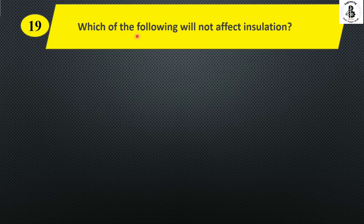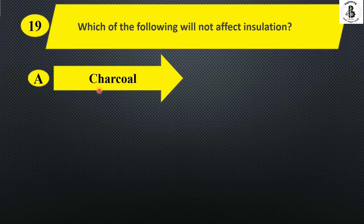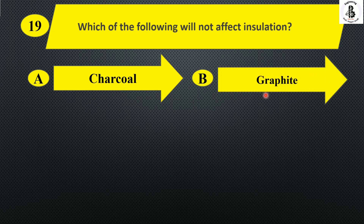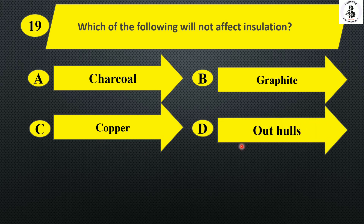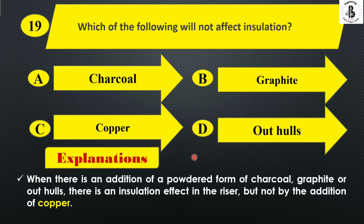Next: which of the following will not affect insulation? Option A charcoal, option B graphite, option C copper, and option D rice hulls. Basically, when powdered charcoal, graphite, or rice hulls are added, there is an insulation effect in the riser. But with the addition of copper, there is no effect on insulation. So the right answer is option C, copper.